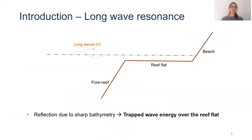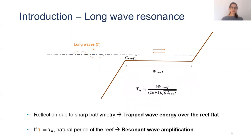Long waves traveling over the reef, due to its sharp bathymetry, can be reflected at the beach and reflected back at the fore reef, leading to trapping of energy over the reef flat. In addition, when the period of the wave T matches the natural period of the reef Tn, this can lead to resonant wave amplification.